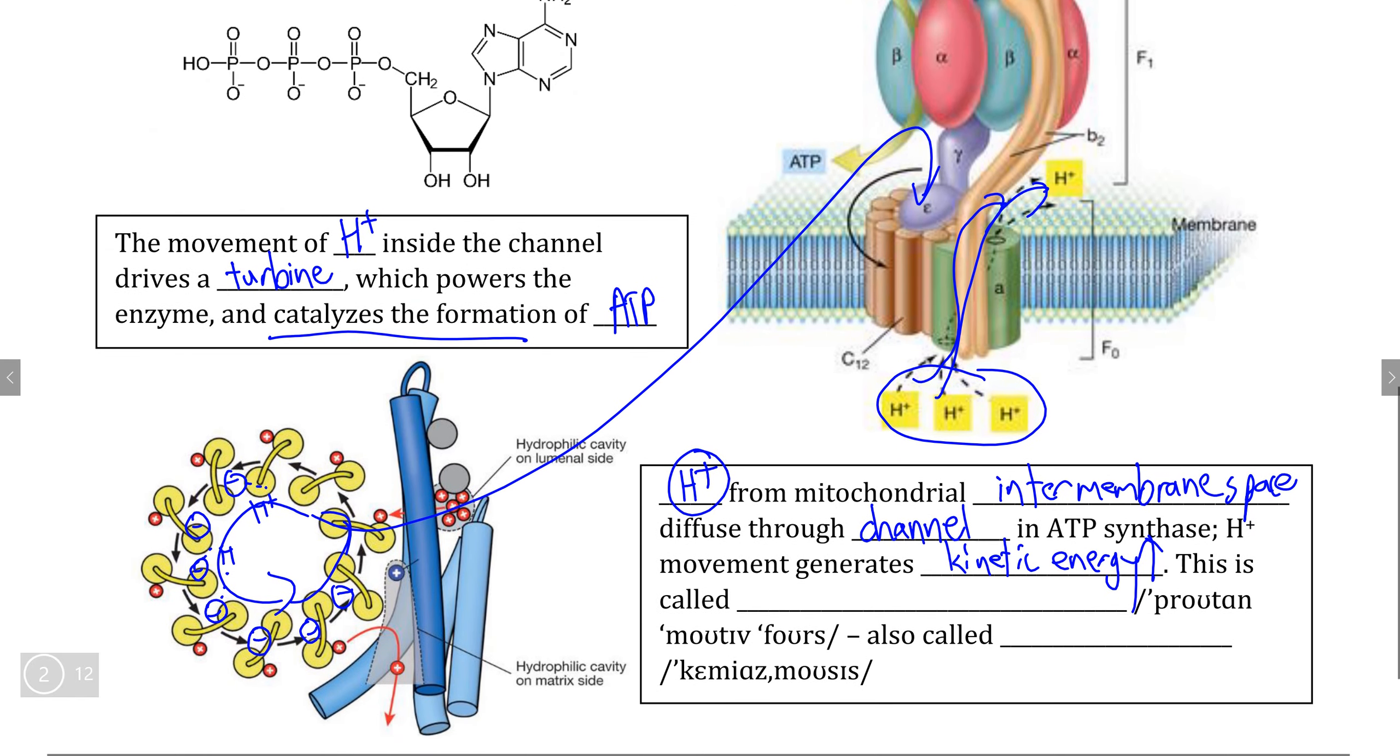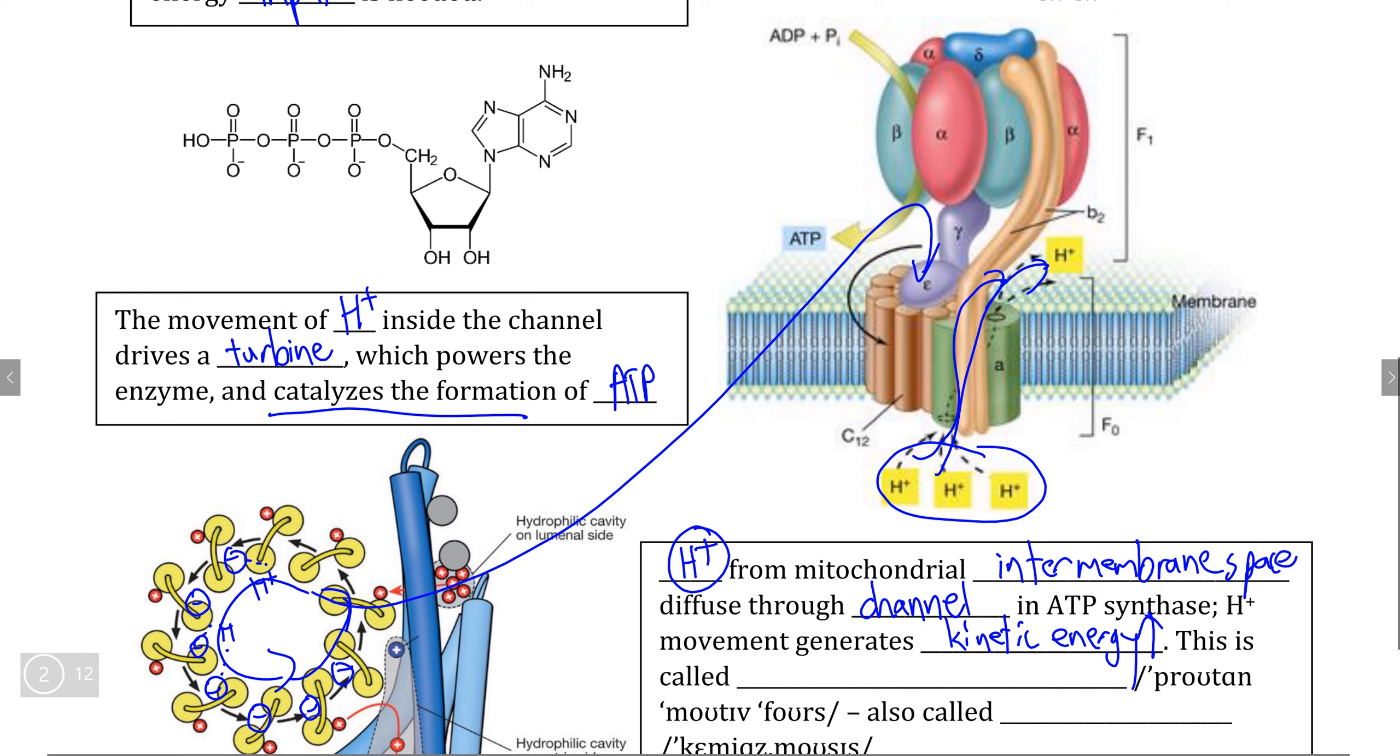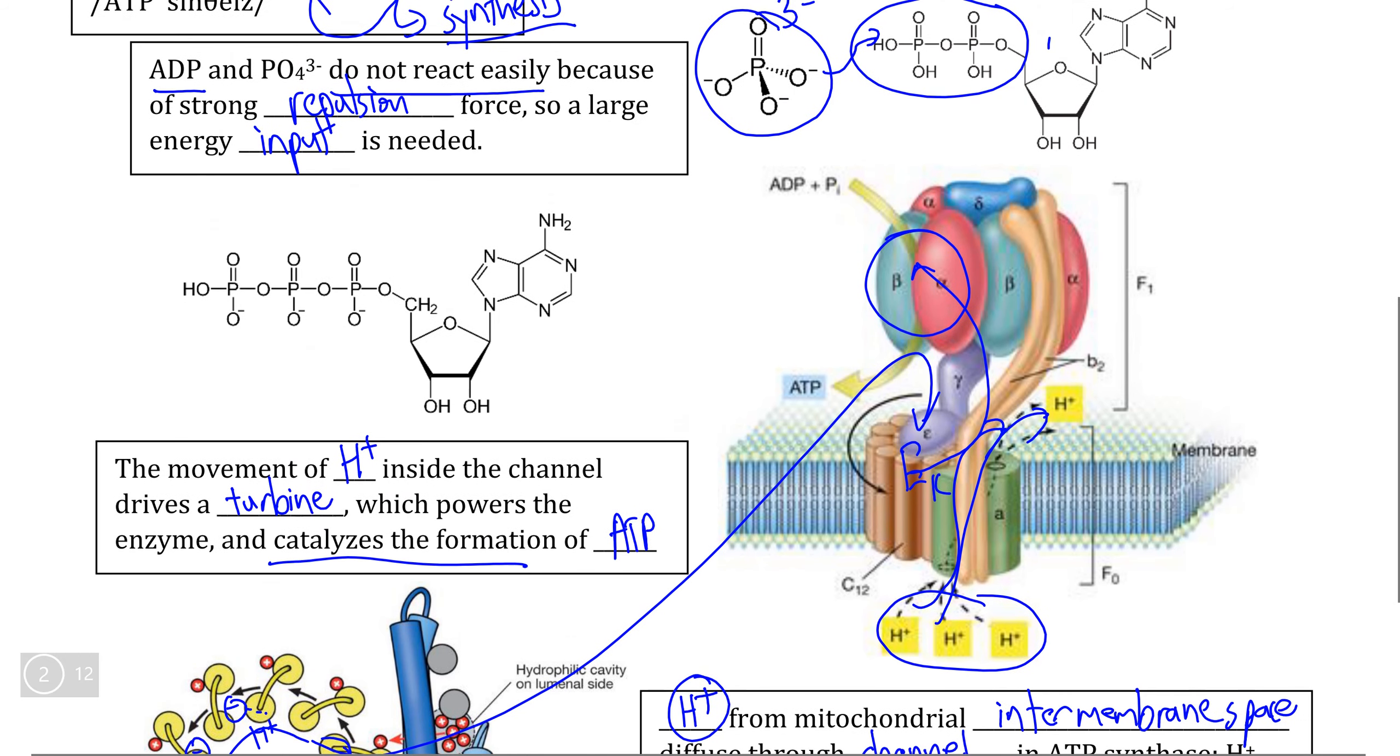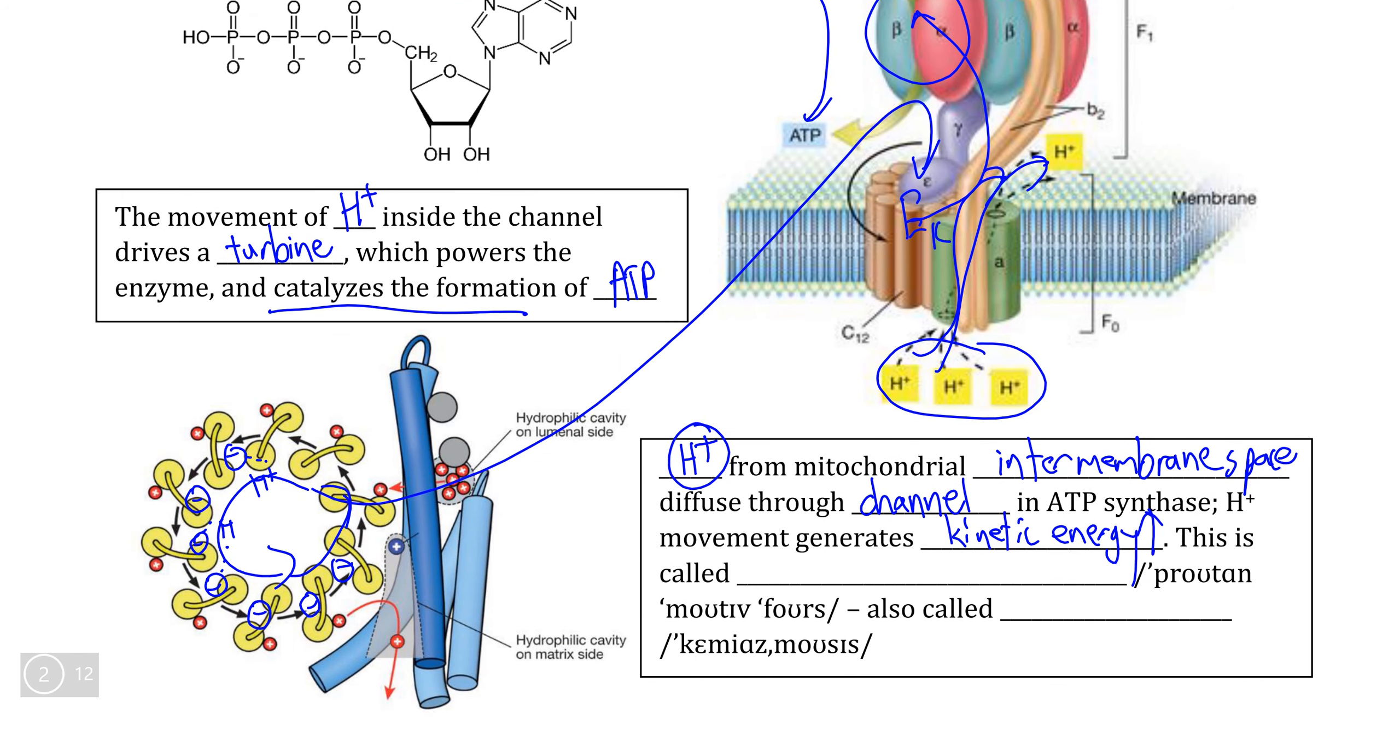And when this kinetic energy is applied to the protein turbine that makes up the actual enzyme of the structure, that kinetic energy is transferred to the actual active site of the enzyme that powers the enzyme enough to force phosphate to join with ADP and produce ATP as a consequence of this.